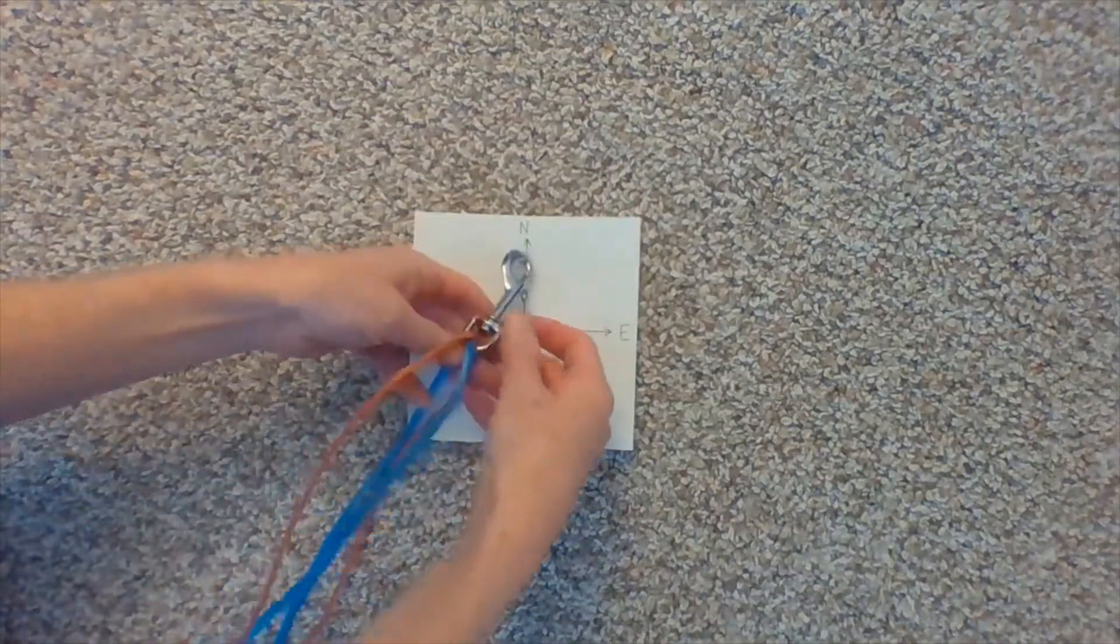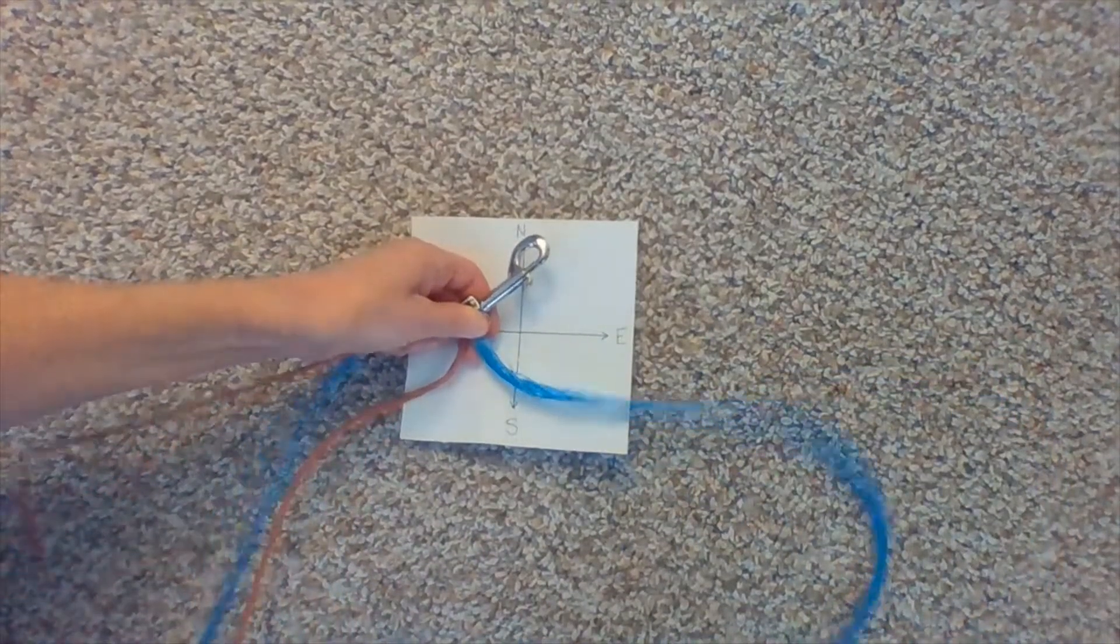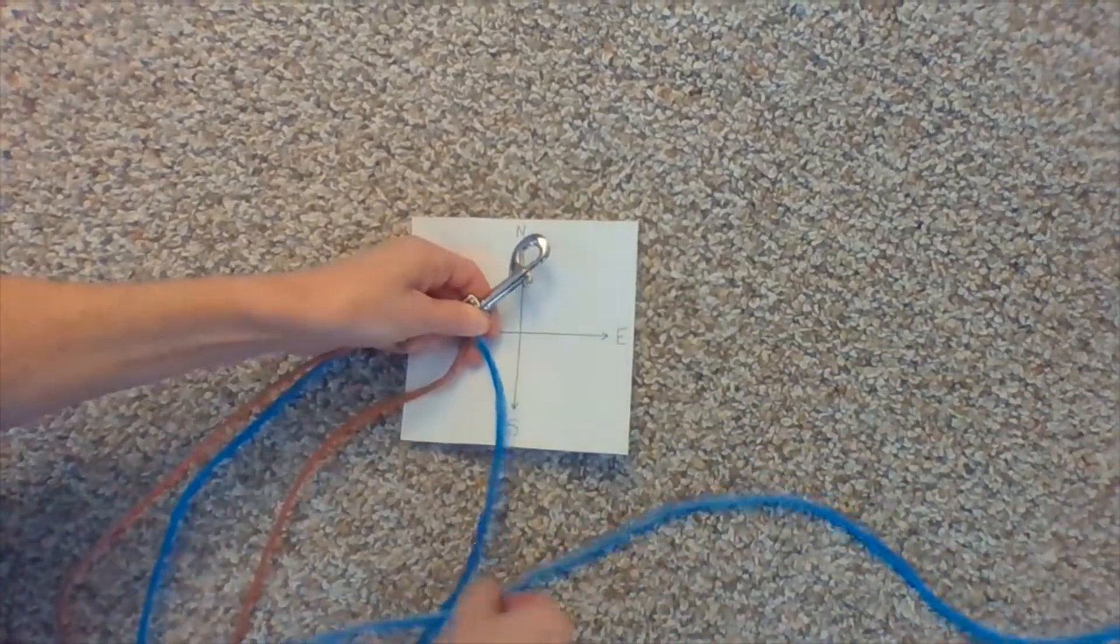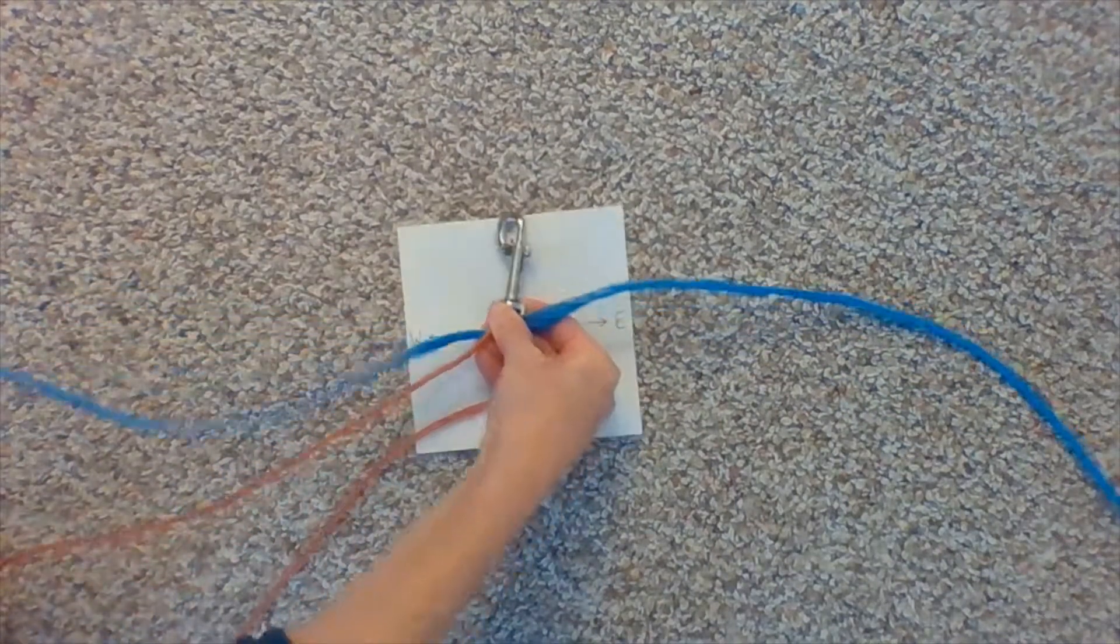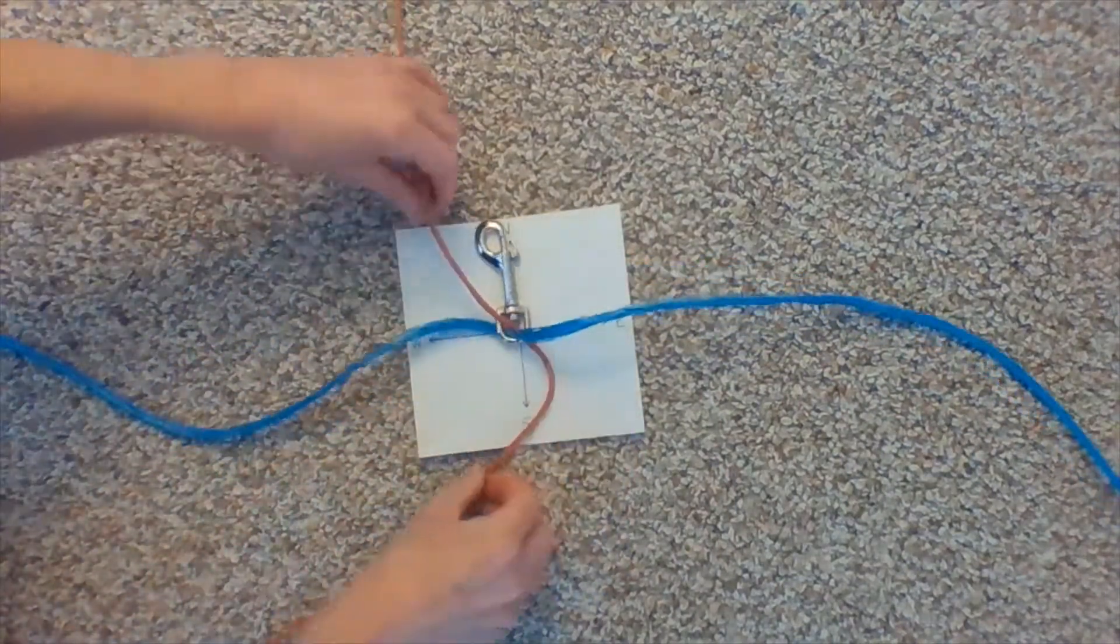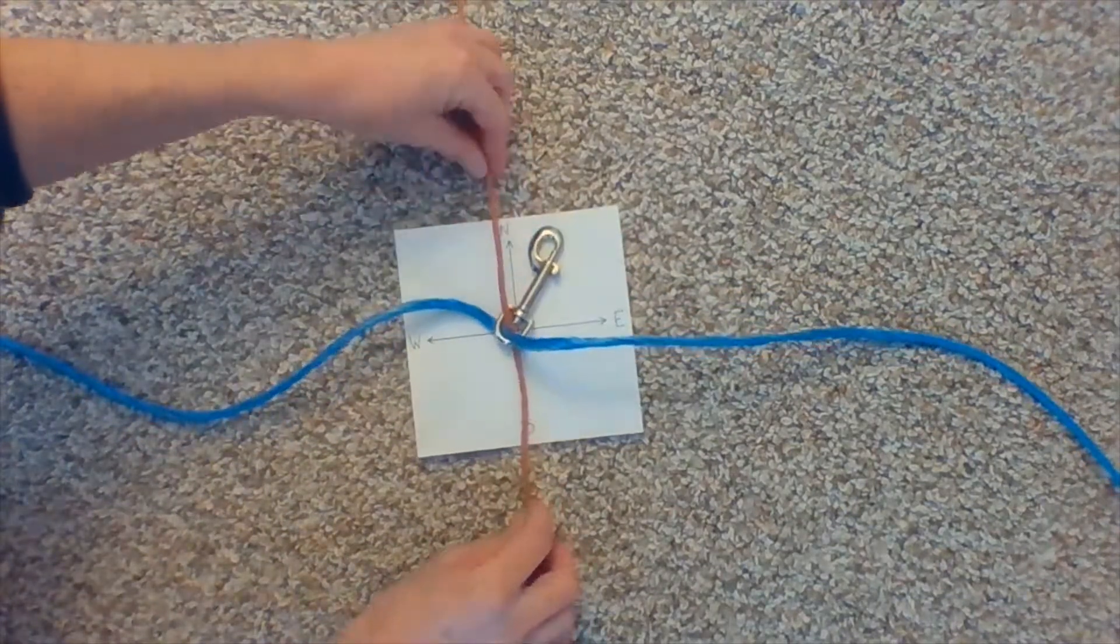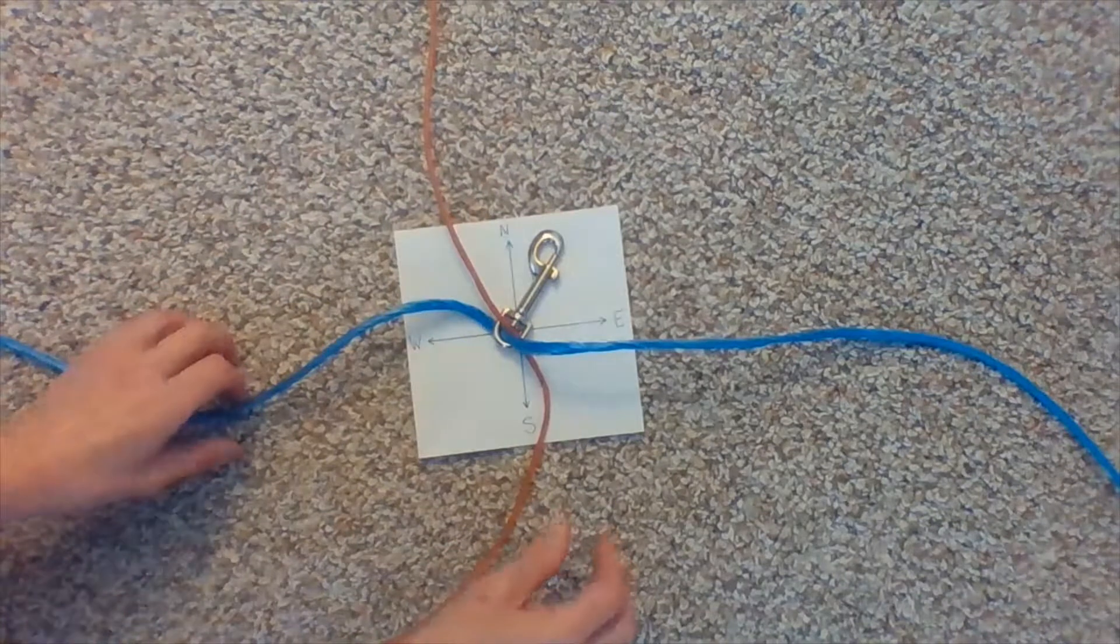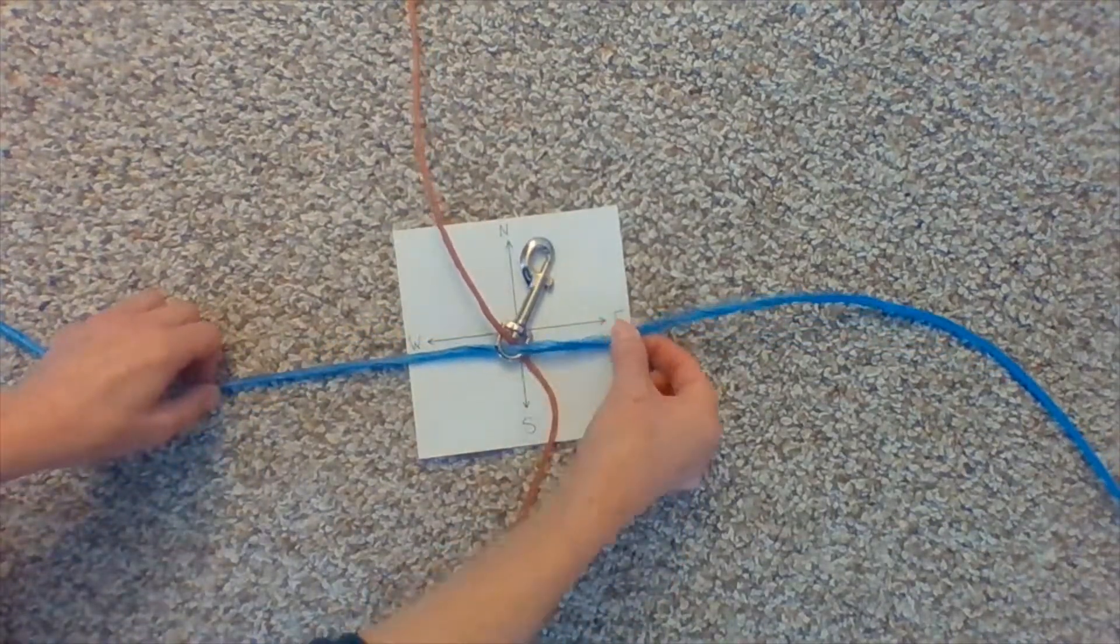And then how the braid will work is that each end of a piece of the twine goes in all four directions. So, the orange strand will always run north and south, and the blue strand will always run east and west.